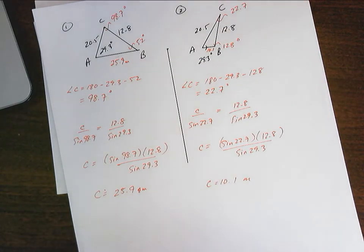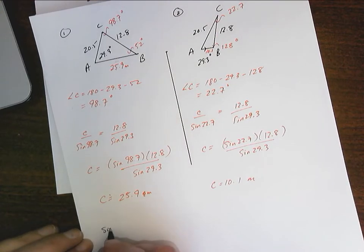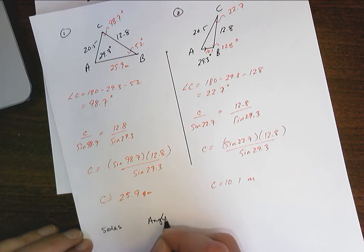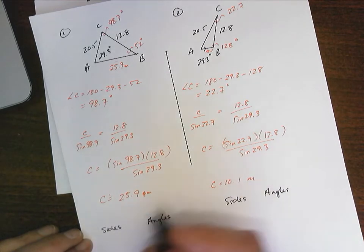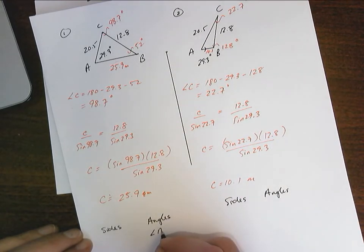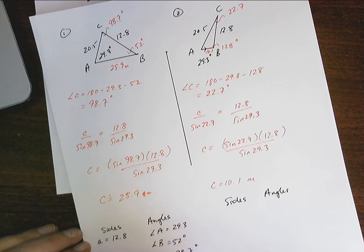And you solve for your triangles. Now, this is something I'd like you to do when you solve for your triangles. I want you to set them up so you have your sides, you have your angles. You can do your angles on your side. So angle A, angle B, angle C. Angle A is 29.3. That was given. Angle B is 52 degrees. Angle C is 98.7 degrees. A is going to be 12.8. That was given. B, that's going to be 20.5. That was given. And C is going to be 25.9.